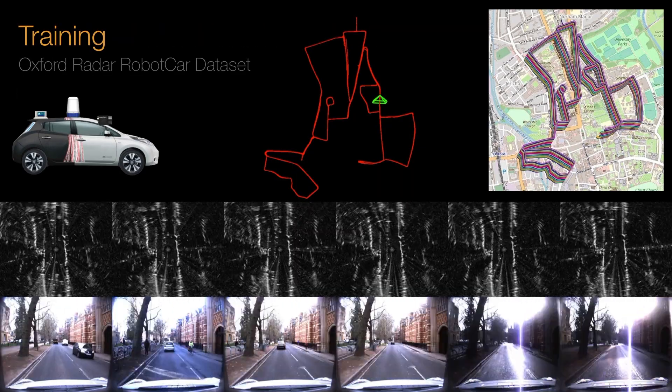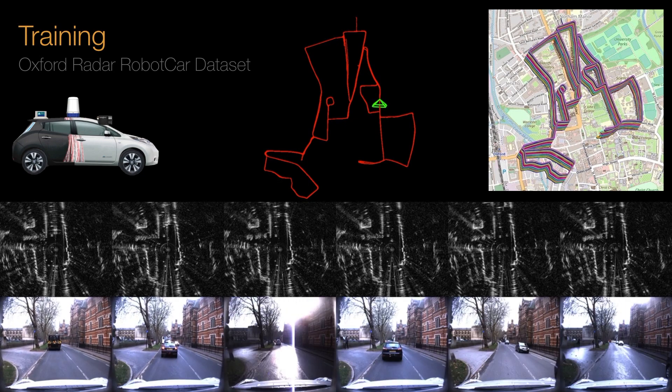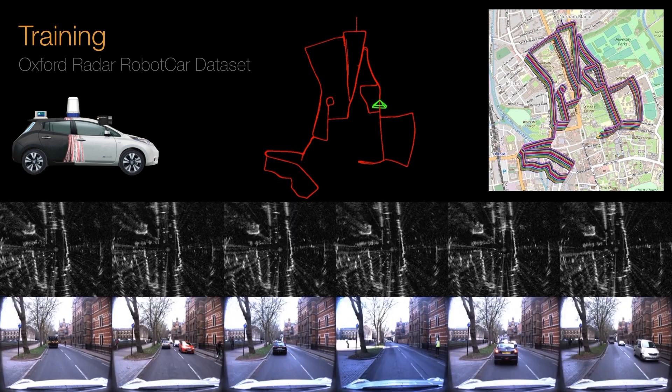To train our system, we use data from the recently released Oxford Radar RobotCar dataset, which comes with both raw radar data and optimised ground truth poses.